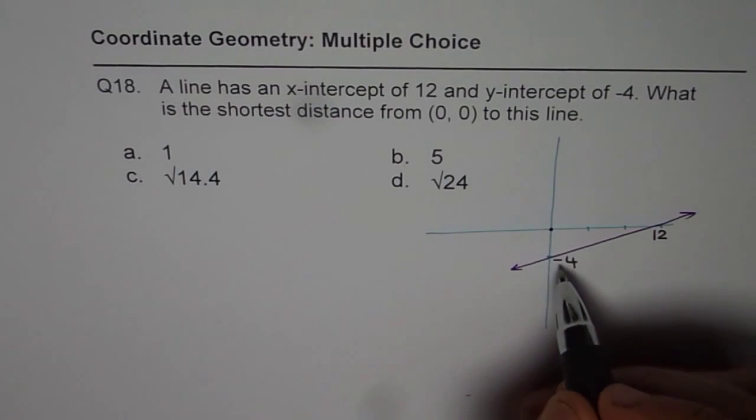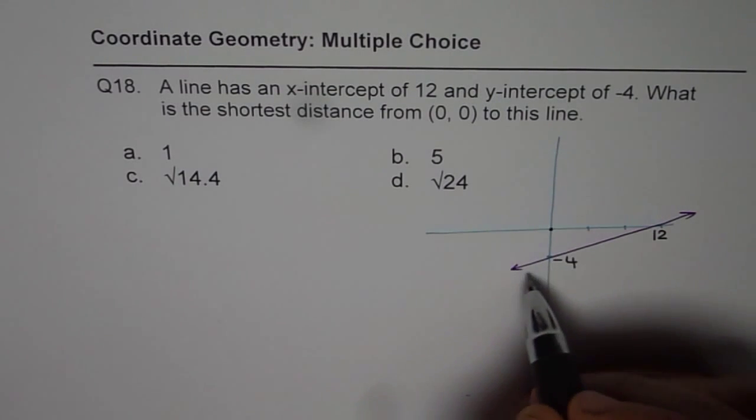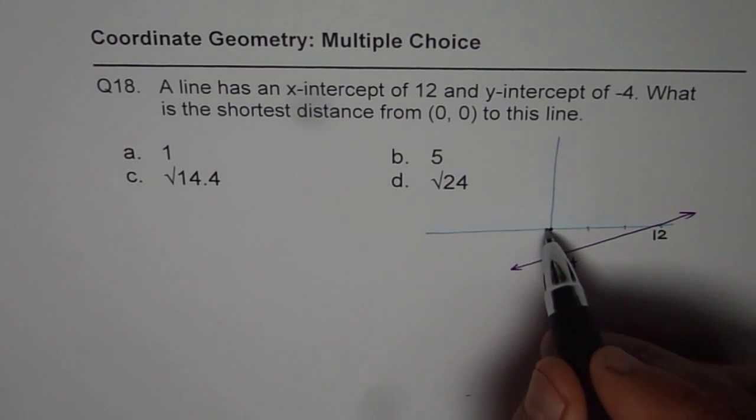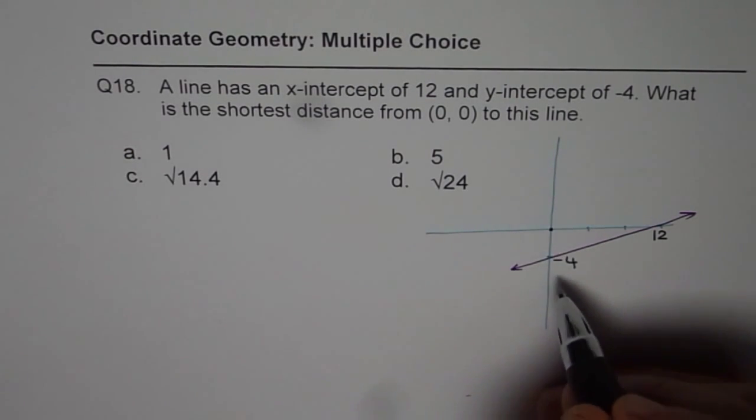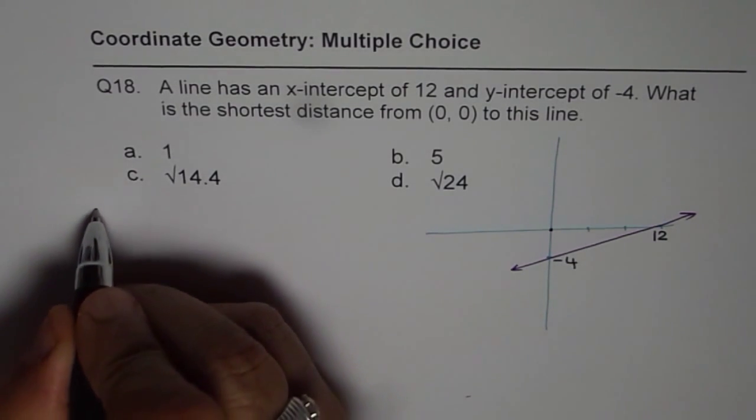Well, the shortest distance is going to be a perpendicular line going through origin and crossing this line. So let's find the slope equation of the perpendicular and the point where it should intersect the line. So find slope first.